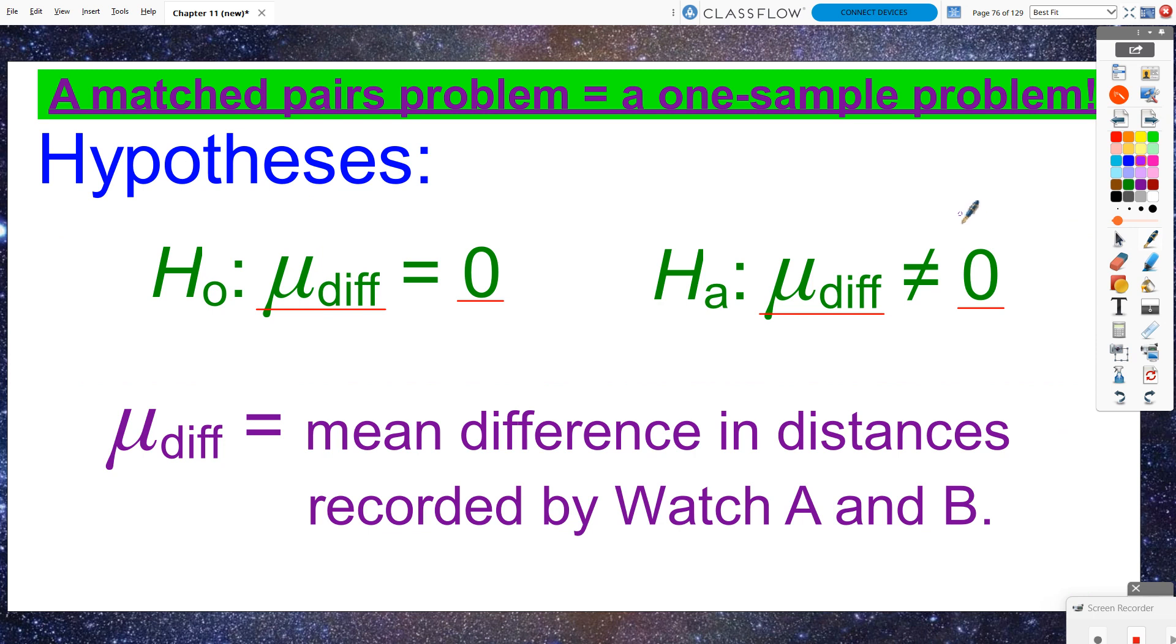For the hypotheses, we are going to look at a mean difference. You either have to write out this DIFF as subscripts here, or if you still just did mu, then you would need to define that mu is equal to the mean difference. I always like to write the DIFFs because that reminds me that I'm doing a matched pairs scenario here. The mean difference is equal to zero.